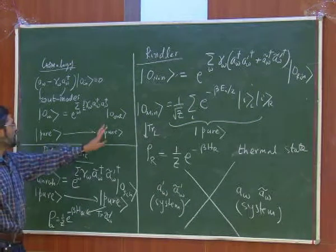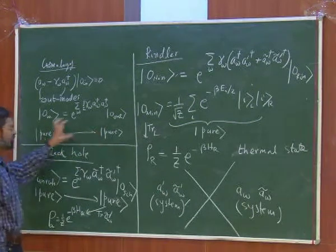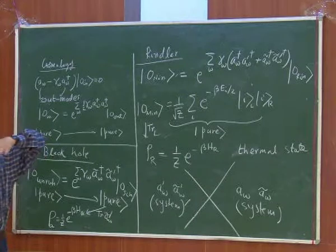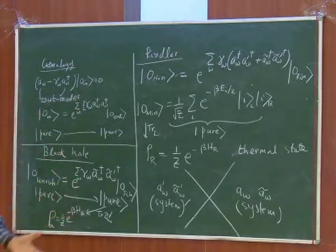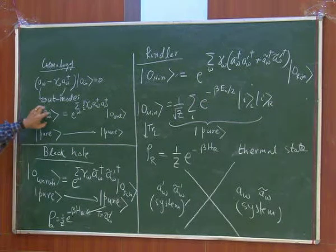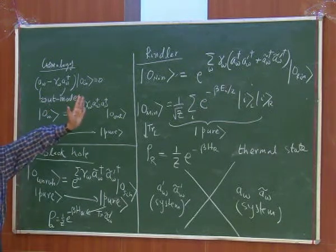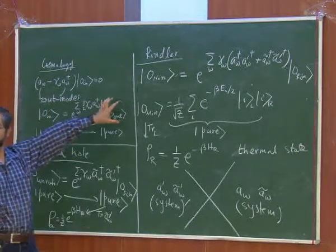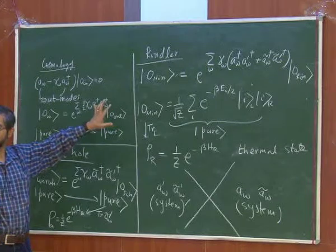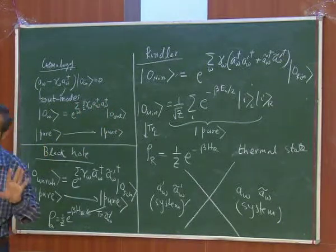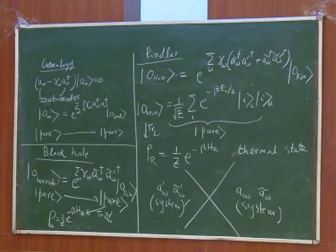This is all being done in the Heisenberg picture, in which the state does not evolve in time but the operators evolve in time. This statement can be thought of as saying that the in-vacuum evolves for infinite time to become a state of this kind. A pure state evolves to a pure state — that is one of the lessons that you have to keep in mind.